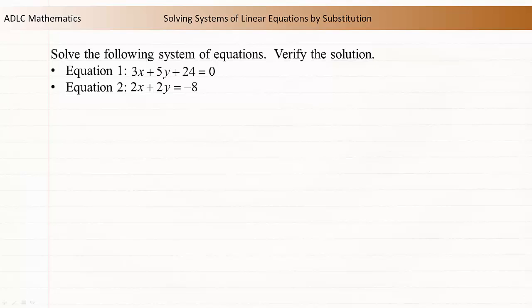The first equation is 3x + 5y + 24 = 0. The second equation is 2x + 2y = -8.